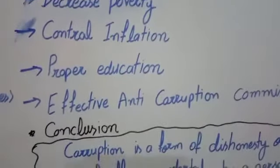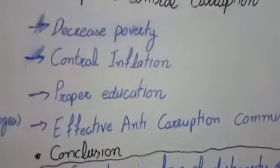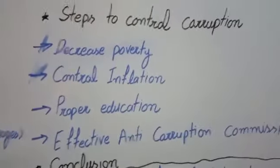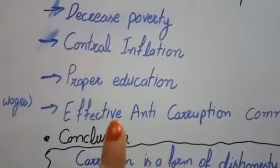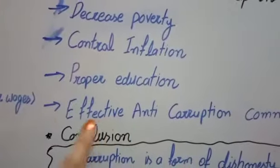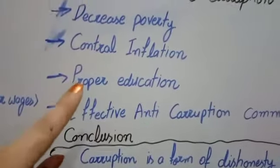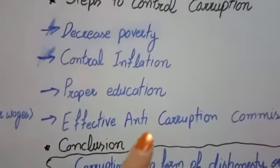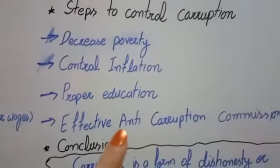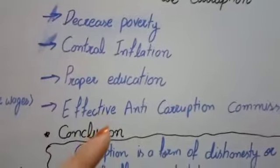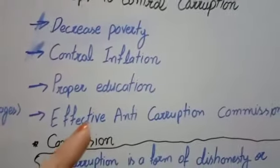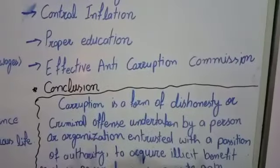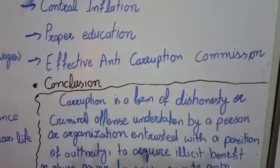اگر ہم اپنے ملک سے poverty کو ختم نہیں کریں گے اور غریبوں کی بنیادی ضروریات پوری نہیں کریں گے تو کبھی بھی ہمارے ملک سے corruption کا خاتمہ نہیں ہو سکتا۔ اس کے علاوہ inflation کو control کرنا بہت ضروری ہے — جب تک inflation rate کم نہیں ہوگا، ملک کے اندر economic stability نہیں آ سکتی اور لوگوں میں سے corruption کو ختم نہیں کیا جا سکتا۔